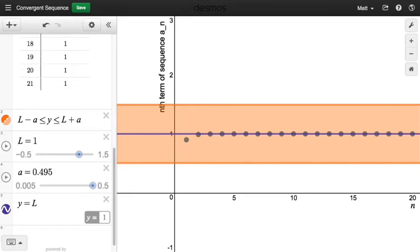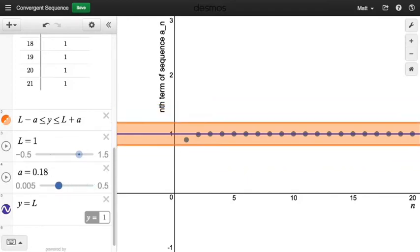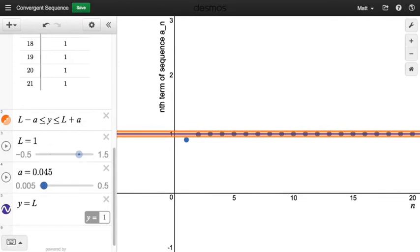So on this diagram here, y equals 1 is this horizontal line that's in blue right here. And according to the definition, it should be true that for all epsilon that we choose, no matter how small, my sequence will eventually go into that strip and it will never leave the strip. So if I choose 0.025 for my epsilon, for example, then it looks like, beginning with maybe even the second term of the sequence...